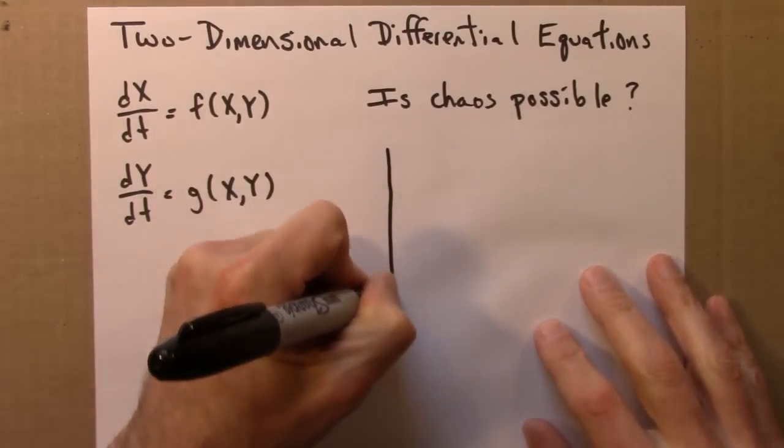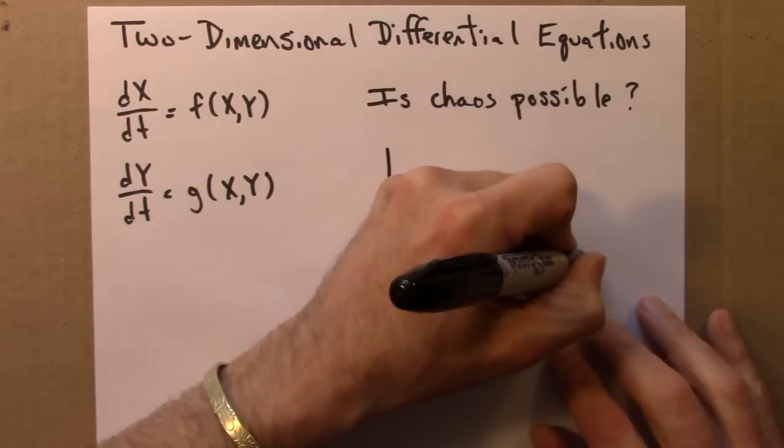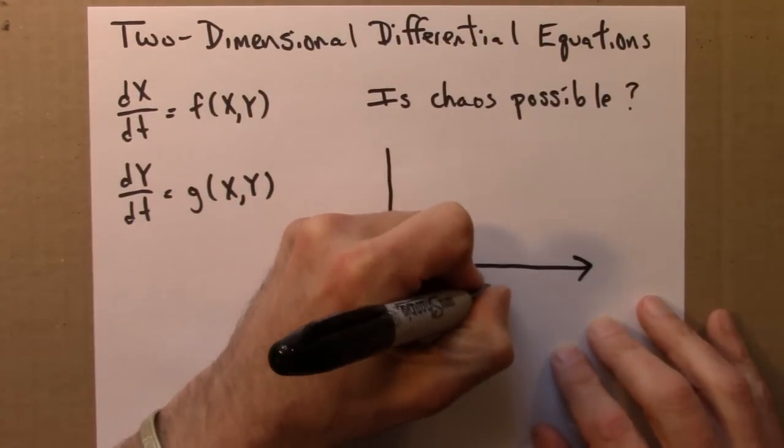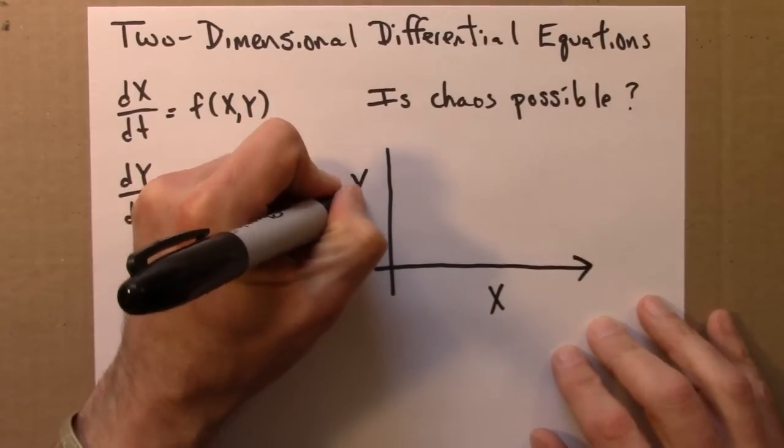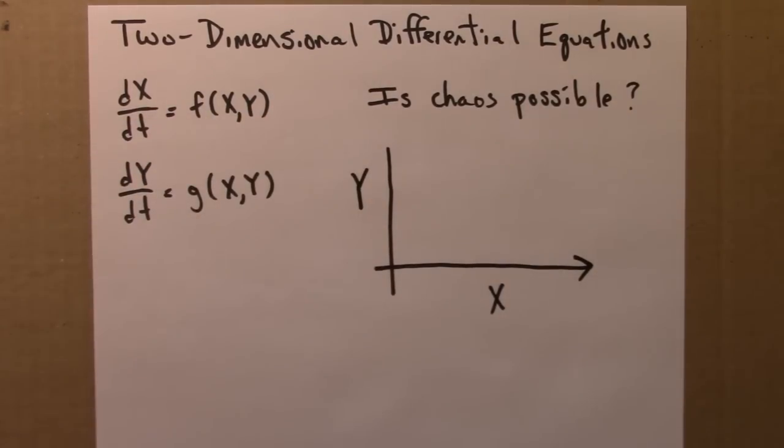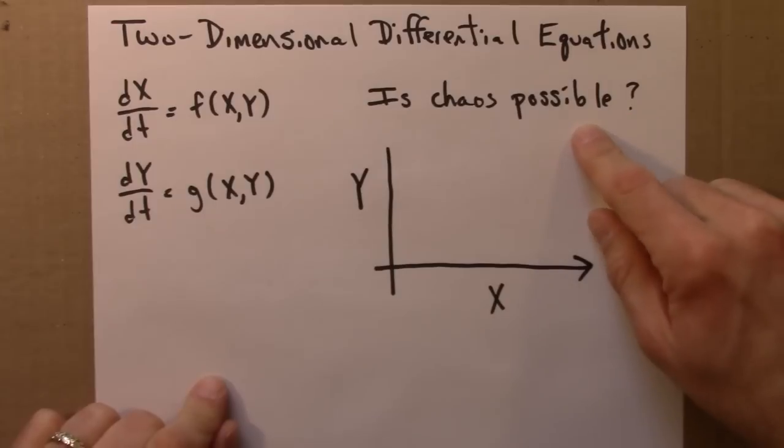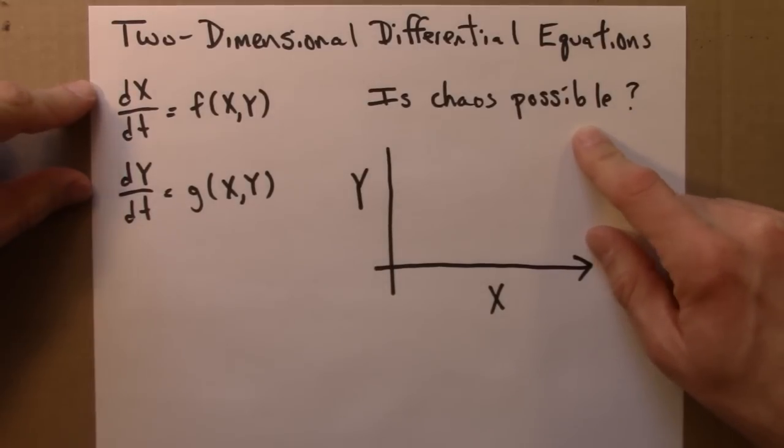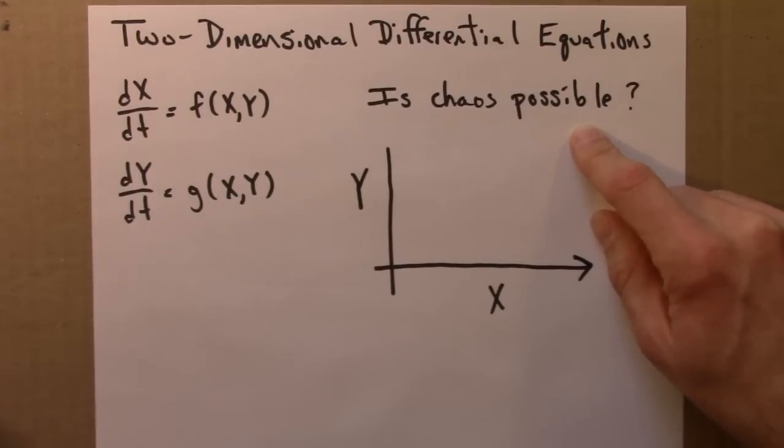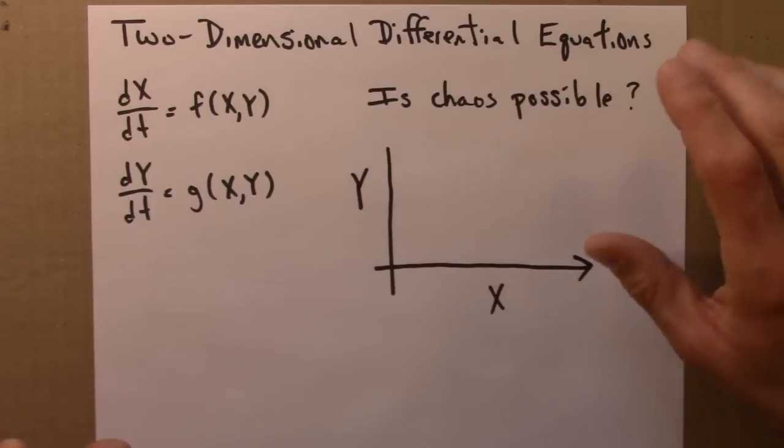I'll draw a phase plane yet again. So let's remind ourselves of what chaos is. Chaos is a bounded, is a deterministic dynamical system. Yep, we've got determinism. The orbits need to be bounded, aperiodic, and have sensitive dependence on initial conditions. So let's focus on those middle two criteria. An orbit that's bounded, and is aperiodic.